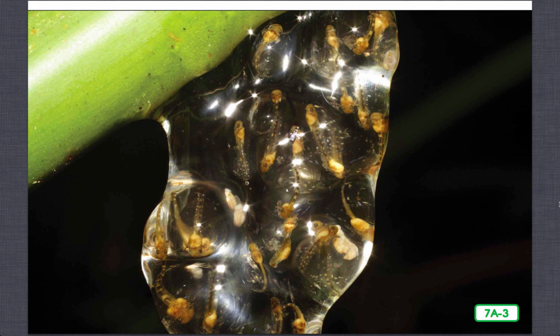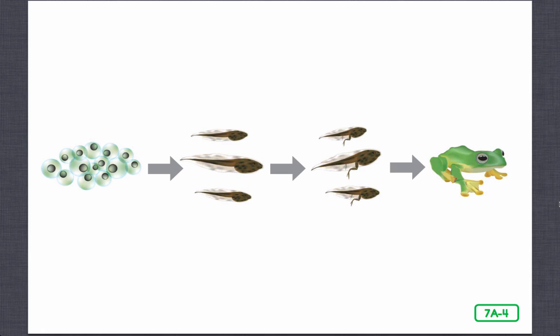Once it hatches, a tadpole lives in water. A tadpole has a long, flat tail which it uses to swim. Its gills allow it to get oxygen from the water. Tadpoles swim about in search of food. Although they still feed from the leftovers of the eggs, they also search for small green water plants. Tadpoles grow very quickly, especially in warm water. After some time, the tadpole begins its transformation into a frog. When a living thing undergoes a huge change in shape, this process is called metamorphosis.